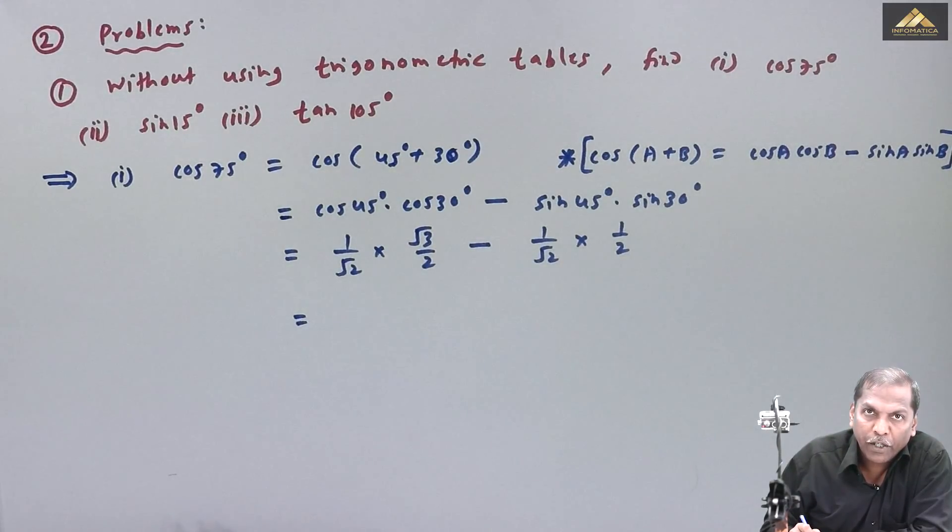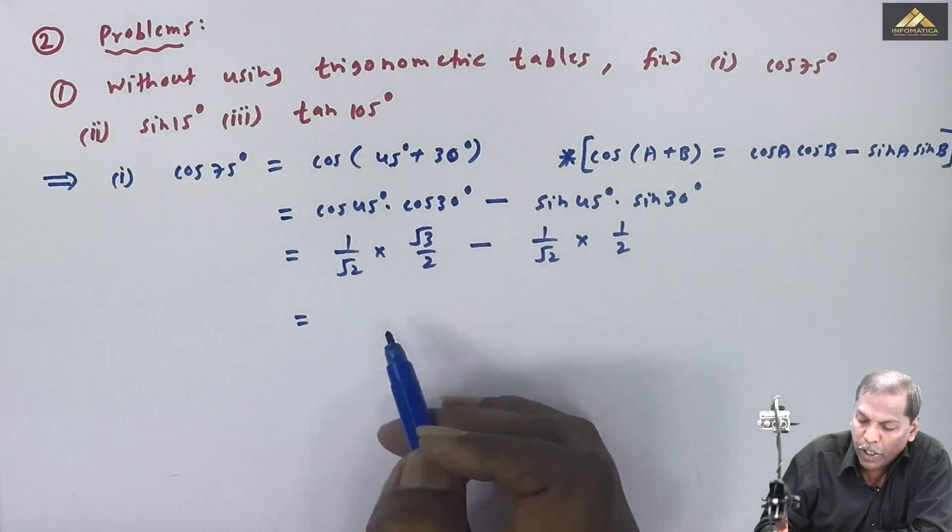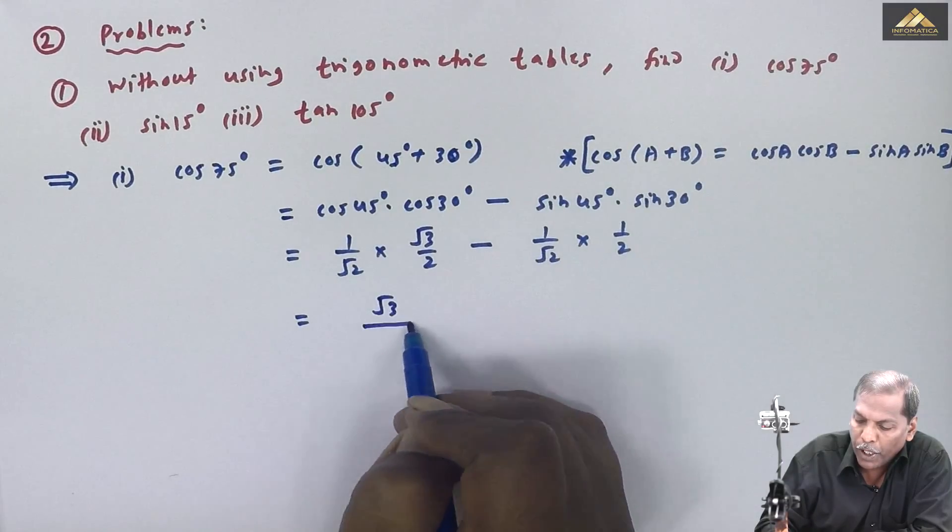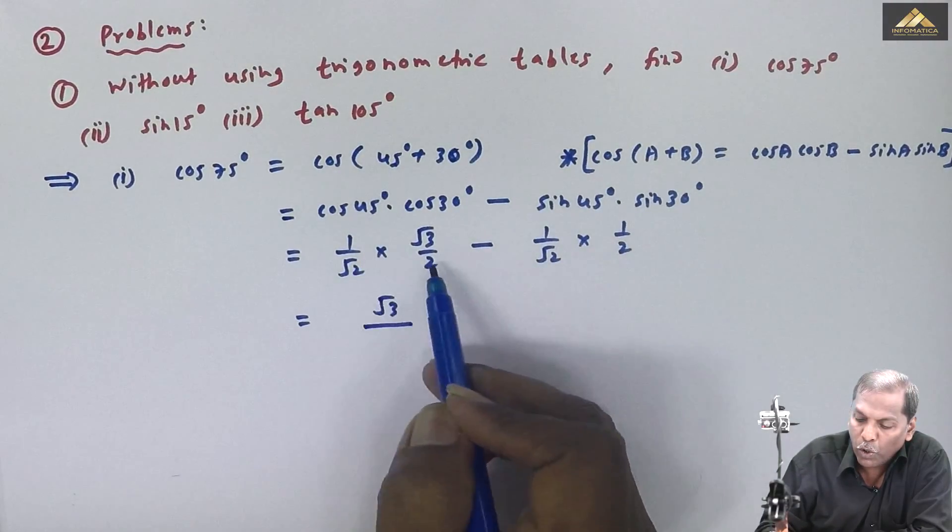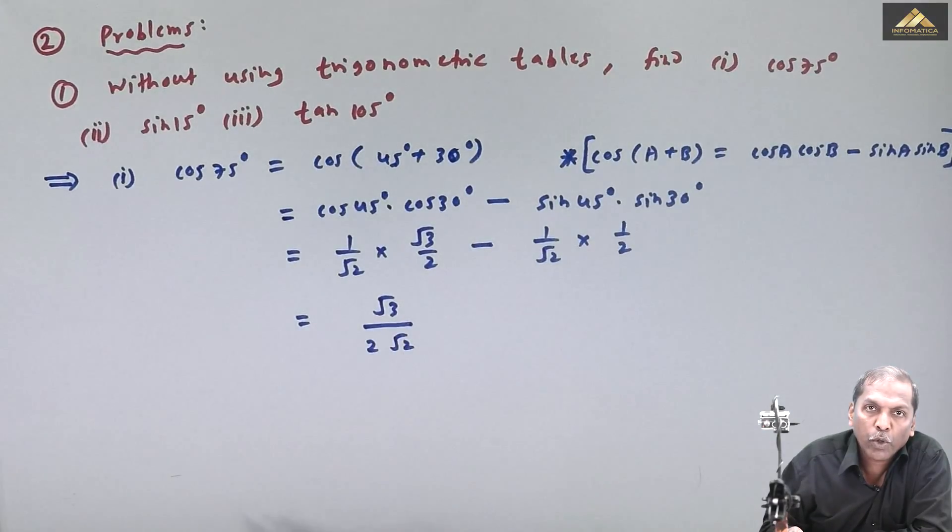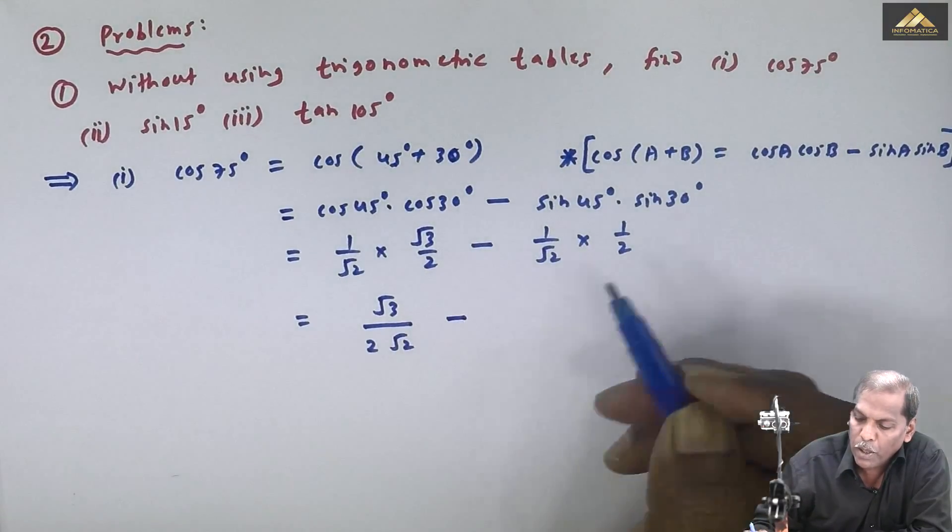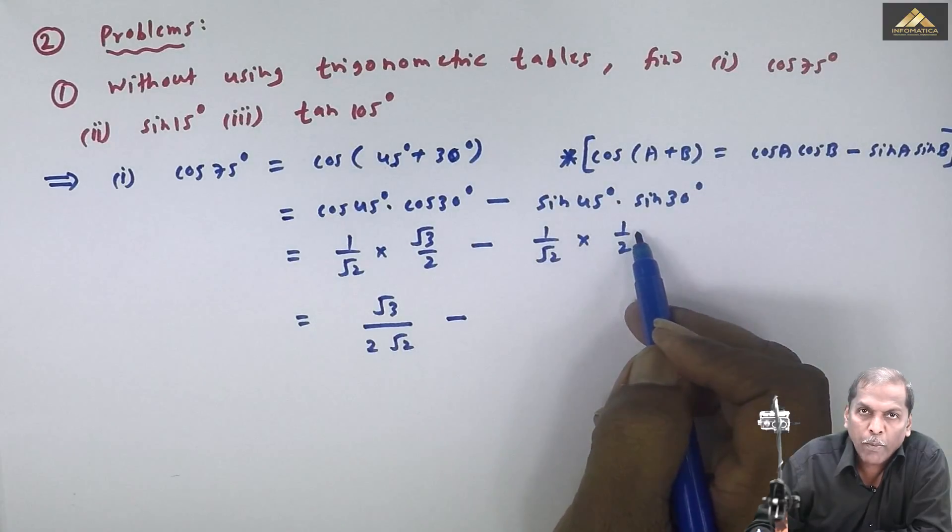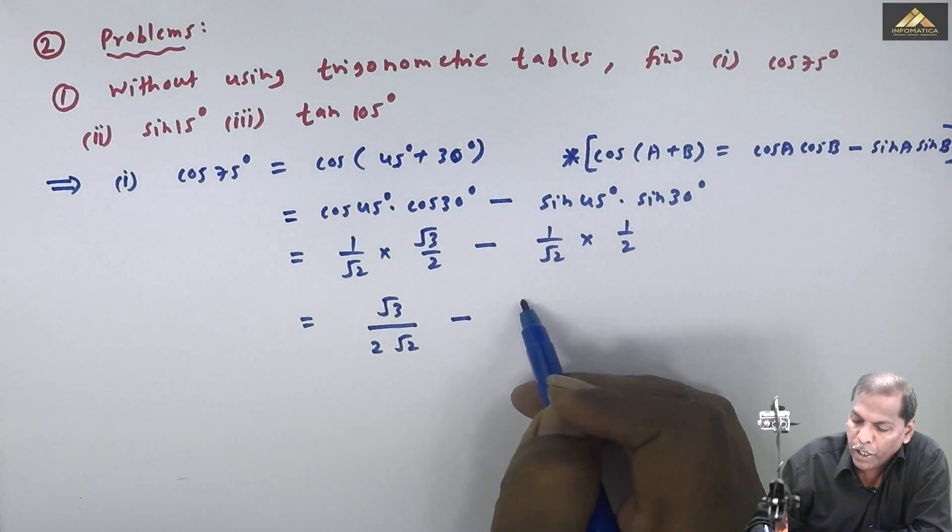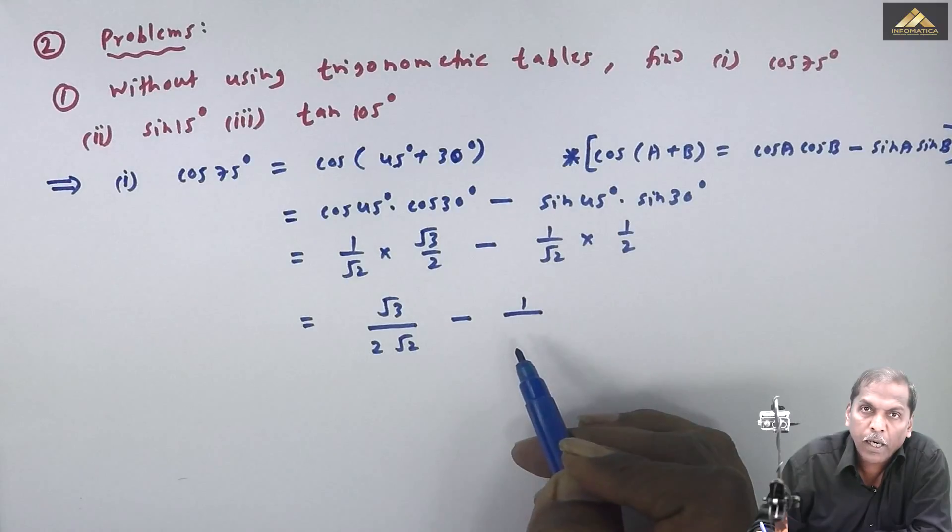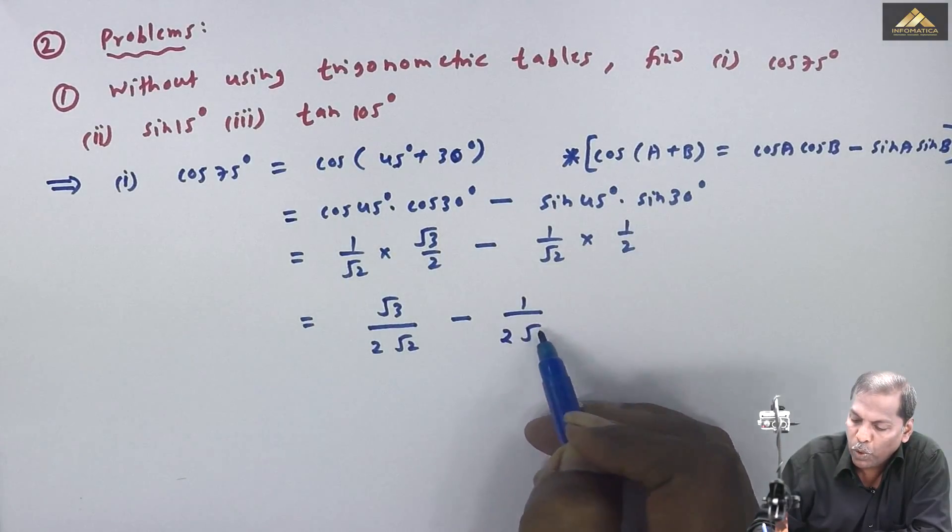So on the next step, root 3 into 1 gives you root 3 upon root 2 into 2, which gives us 2 root 2. Then minus 1 by root 2 into 1 by 2, after multiplication the answer is 1 upon 2 root 2.